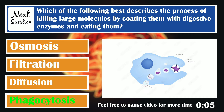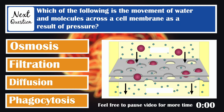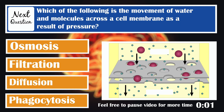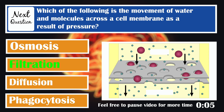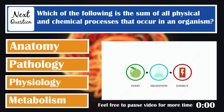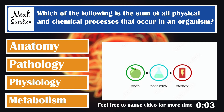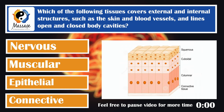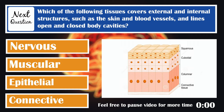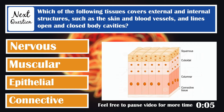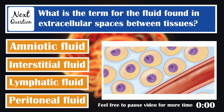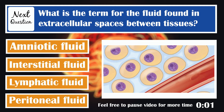Which of the following is the movement of water and molecules across a cell membrane as a result of pressure? Filtration. Which of the following is the sum of all physical and chemical processes that occur in an organism? Metabolism. Which of the following tissues covers external and internal structures such as the skin, blood vessels, and lines open and closed body cavities? Epithelial tissue covers external and internal structures. What is the term for the fluid found in extracellular spaces between tissues? Interstitial fluid.